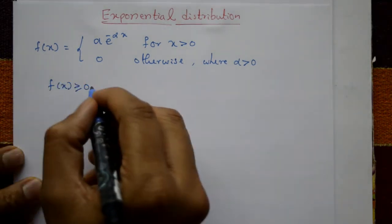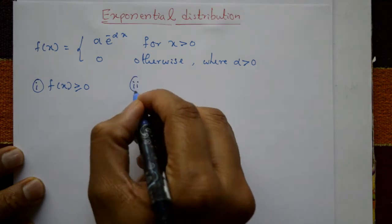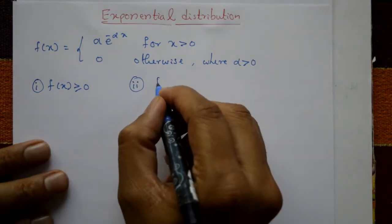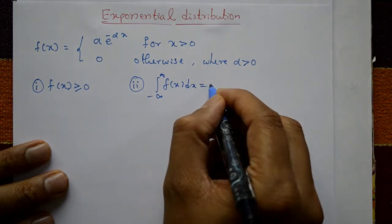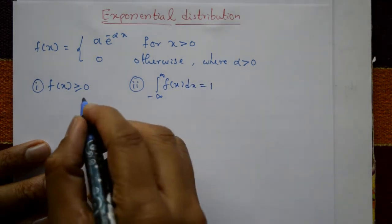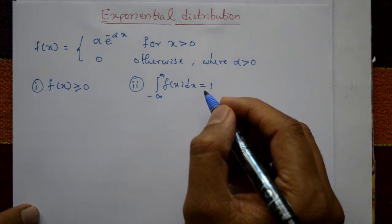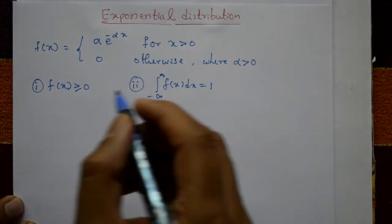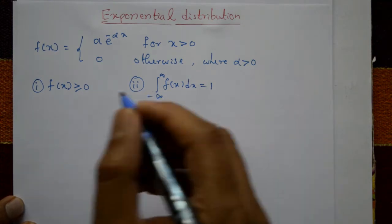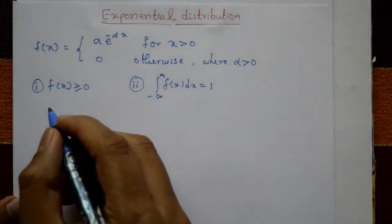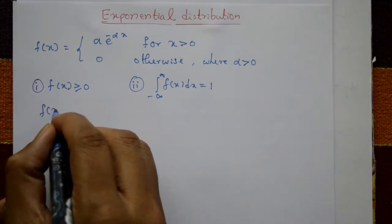Two conditions must be satisfied: first, f(x) must be greater than or equal to zero; and second, the integration from minus infinity to plus infinity of f(x) dx must equal one. These two conditions must be satisfied for a function to be a continuous probability distribution.